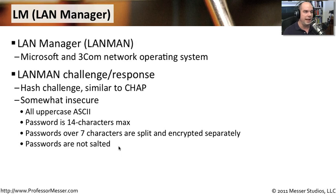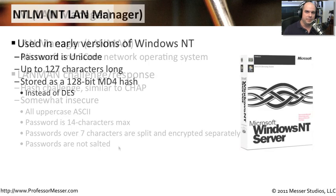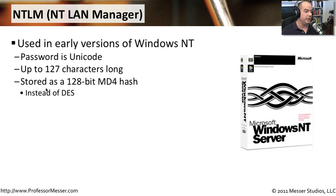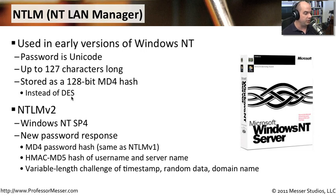There needed to be different ways to handle the LAN Manager configuration, so Microsoft tweaked it to make a few things more secure. That update came with Windows NT, where it was upgraded to something called NTLM — NT LAN Manager. The password is now Unicode, giving much more flexibility on the types of characters allowed, up to 127 characters long, and it's stored as a 128-bit MD4 hash, which is generally a lot more secure than the smaller DES hashes used in the LAN Manager configuration.